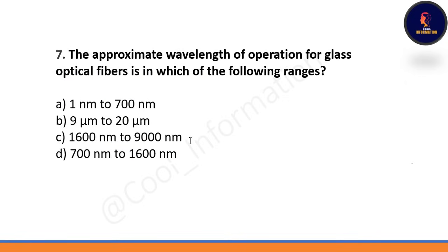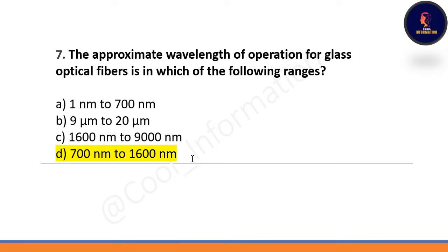Next question: the approximate wavelength of operation for glass optical fiber is in which range? Options are 1 nm, 1 nm to 700 nm, 9 µm to 20 µm, 1600 nm to 9000 nm, or 700 nm to 1600 nm. Correct option is D — 700 nanometers to 1600 nanometers.